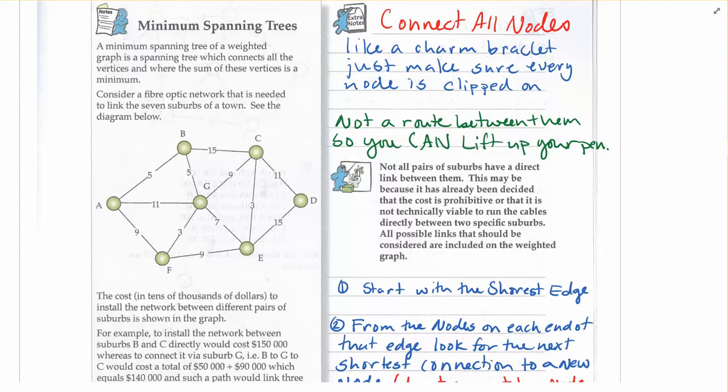So I sometimes think of it as a charm bracelet, and you just want to make sure that every node is clipped on to that link somehow, is clipped on to another charm, or is clipped on to its own chain, and make sure that you get them all on there.